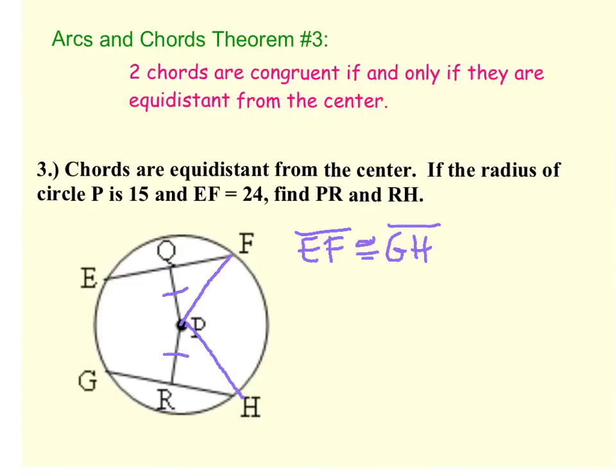The other thing they tell us is that EF is 24. Well, remember that the theorem we talked about, I think it's theorem number two, says that if the chord is perpendicular to the diameter, which that's what we have right here, we do have a perpendicular angle here, then EQ and EF have to be congruent. Well if that's the case, and if EF is 24, then I know that QF is 12. I also know that EQ is 12, and because EF and GH were congruent, that means that GR and HR are also 12.